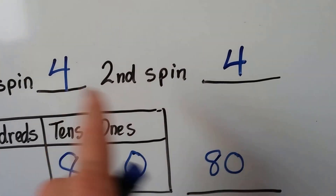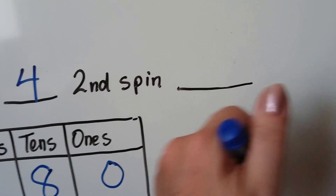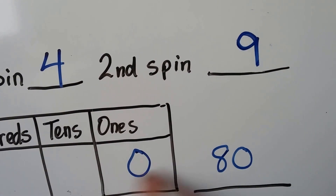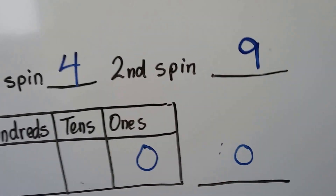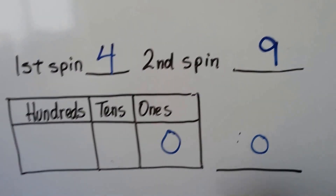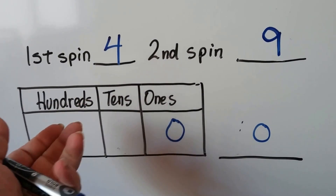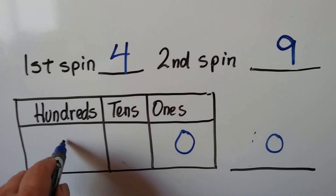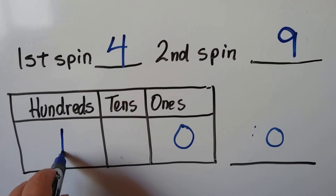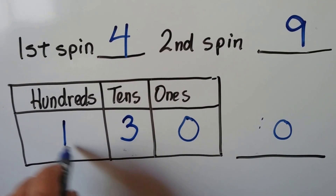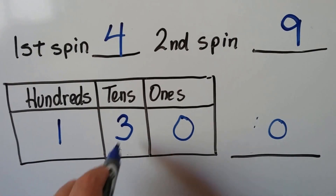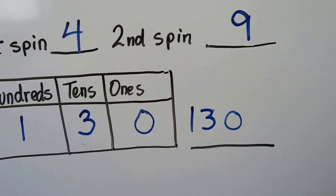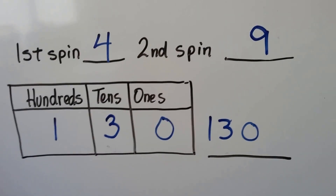But what if it didn't land on the four again — what if it landed on a nine? Four plus nine: nine, ten, eleven, twelve, thirteen — that would be thirteen tens. We'd regroup: put the one over here and the three for the thirteen, giving us one hundred, three tens, and zero ones — written as one hundred thirty.